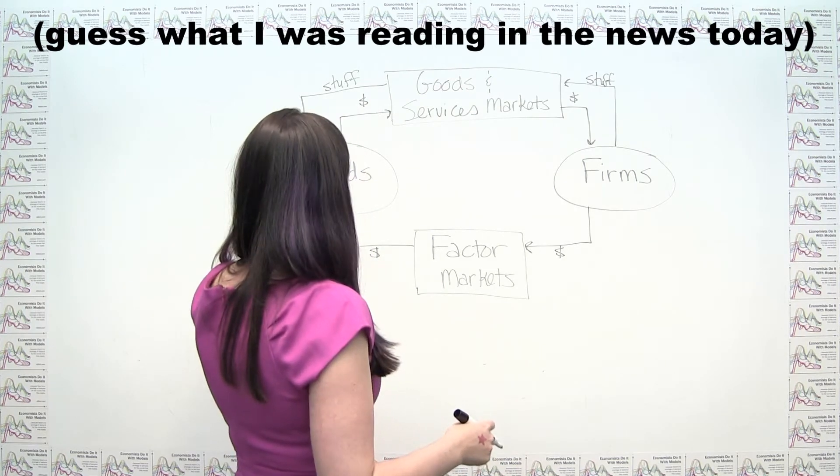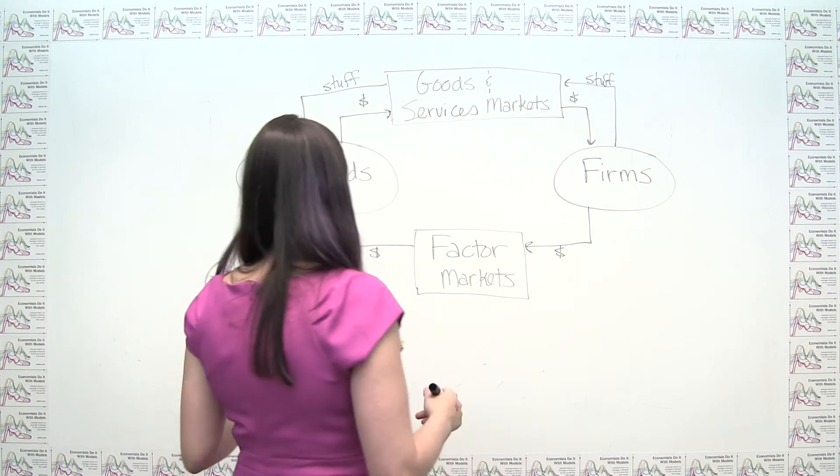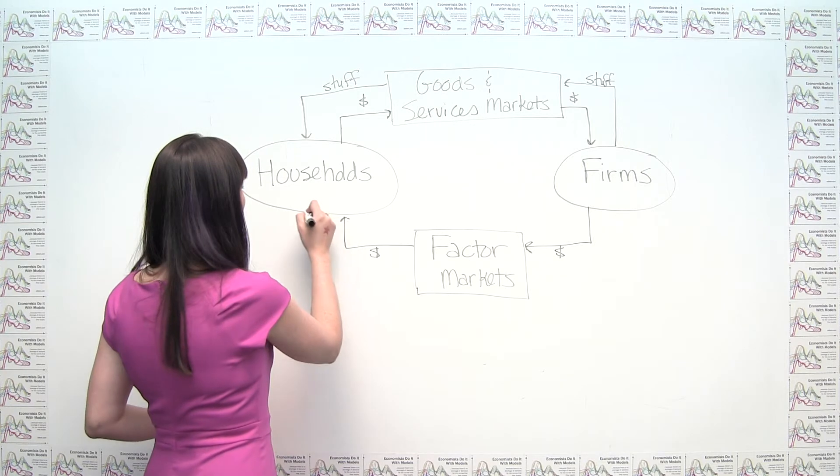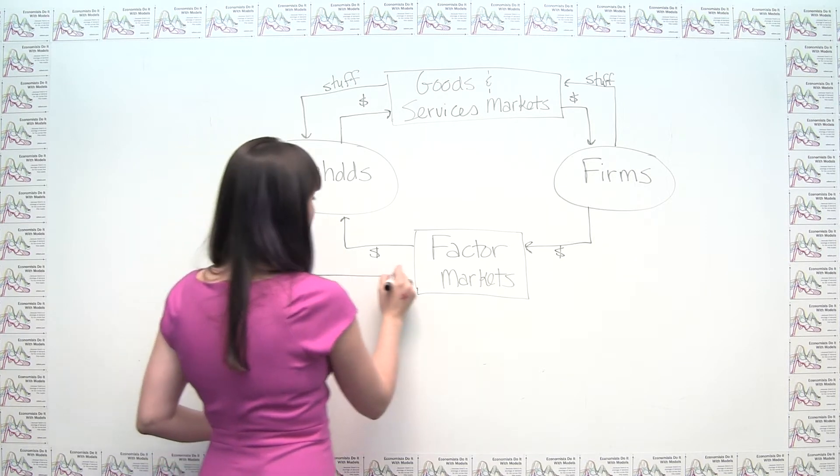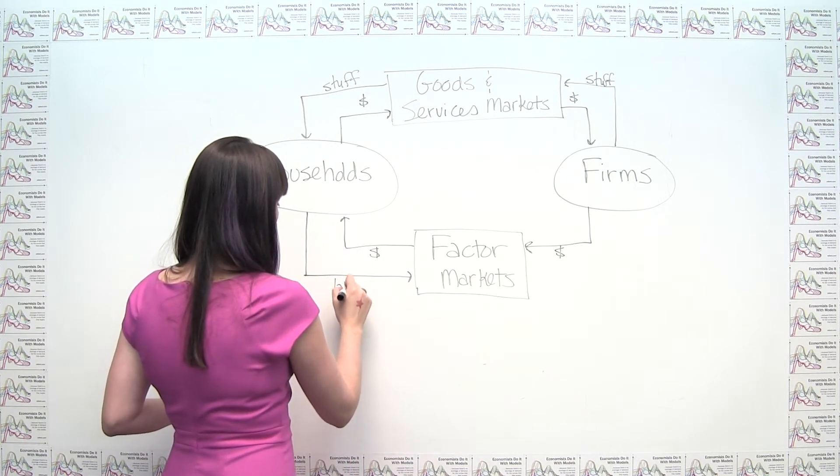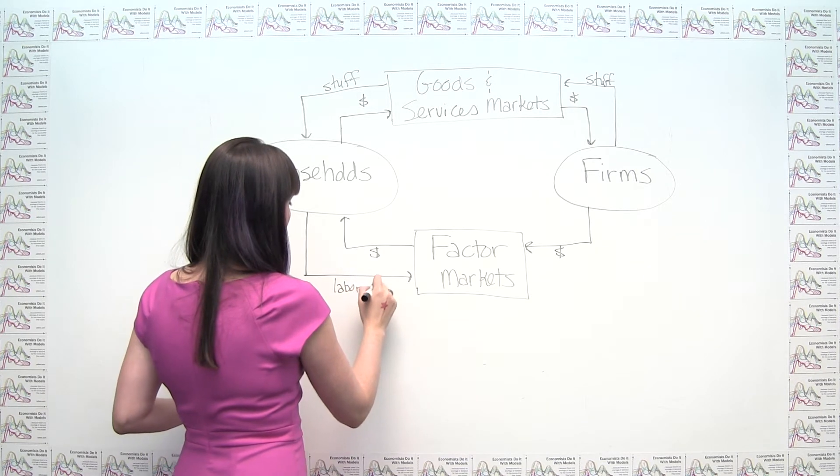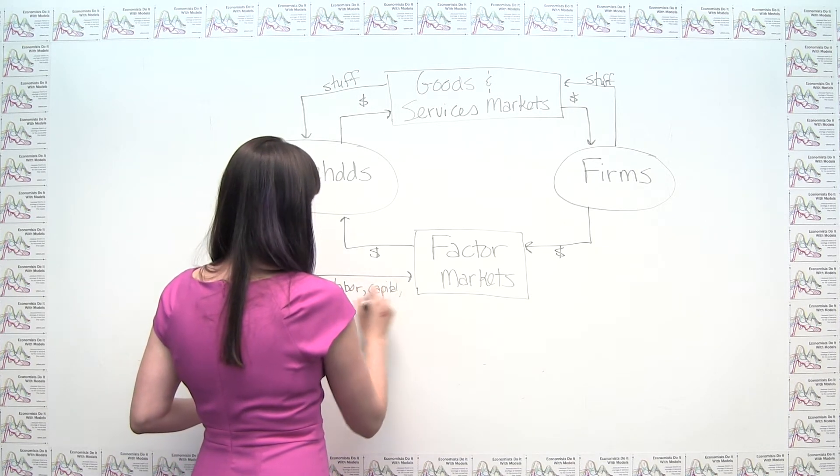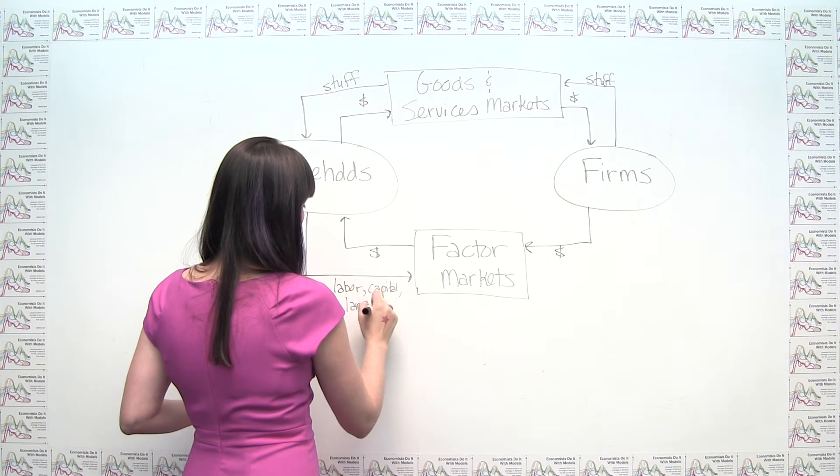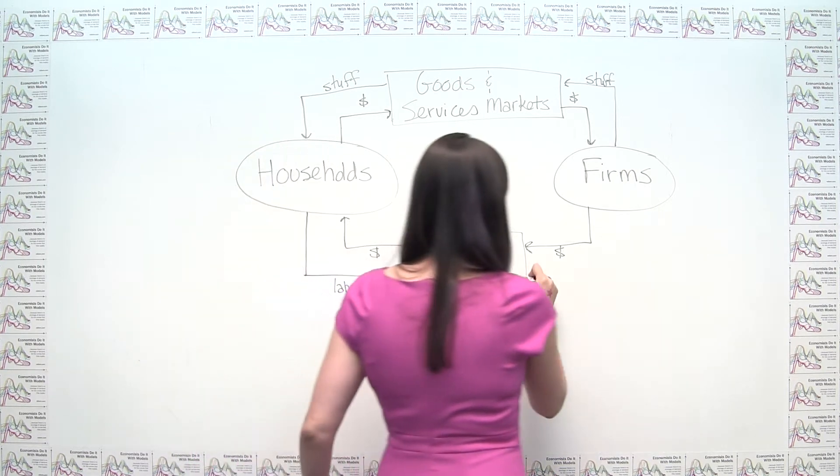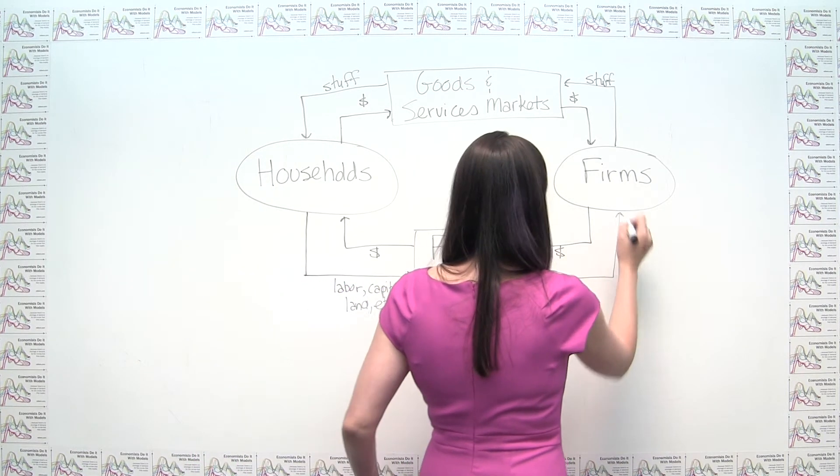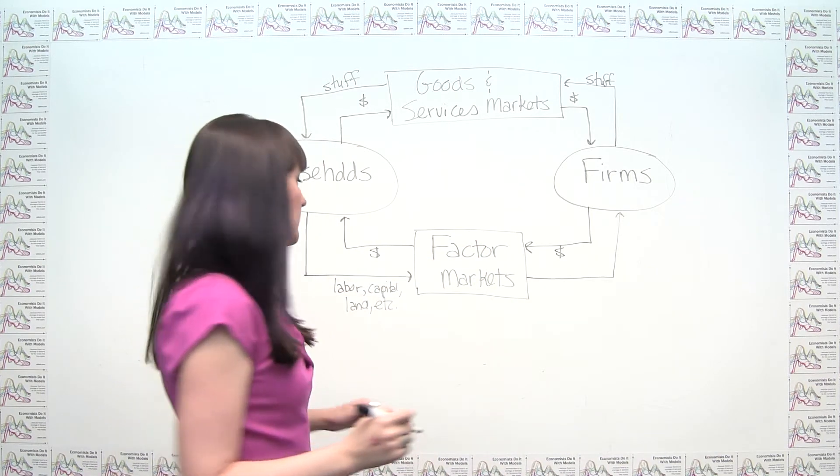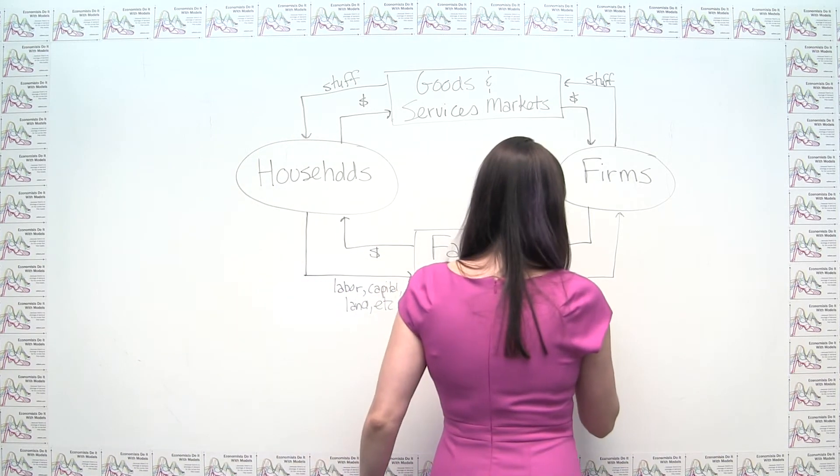So here, we think about, well, what do the firms get in return? Well, in return, they're getting the factors of production. They're getting labor, capital, land, and so on. And similarly here, this is going all the way to the firms. It doesn't stop. It's not eaten by the factor market. So you would see it keep going here.